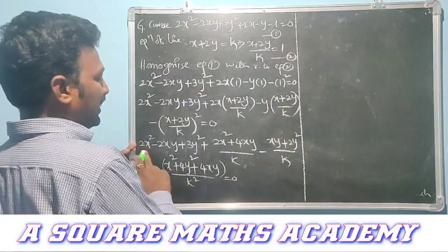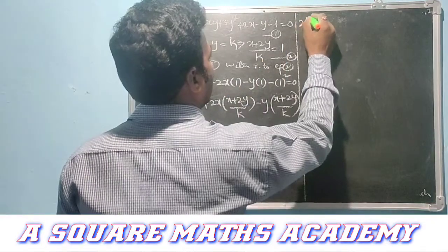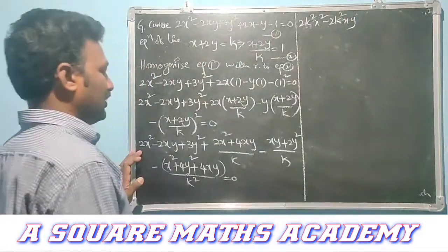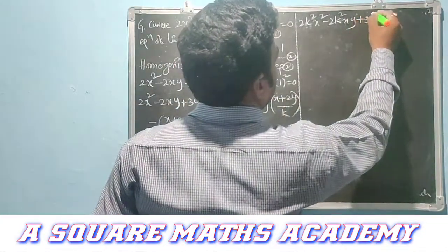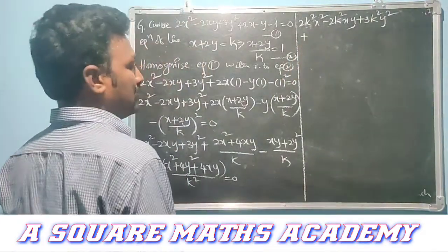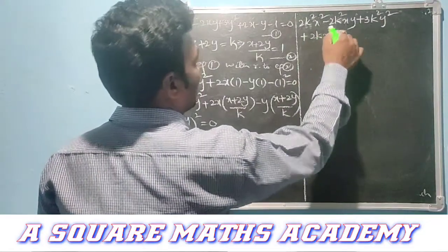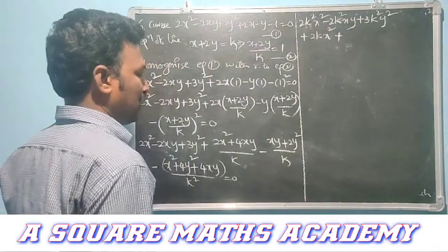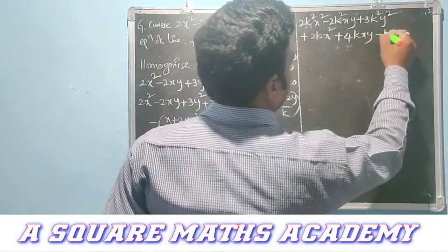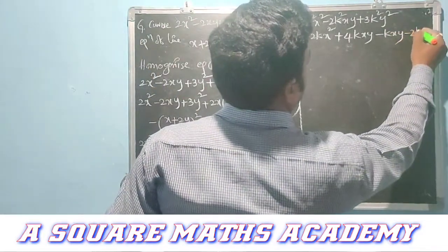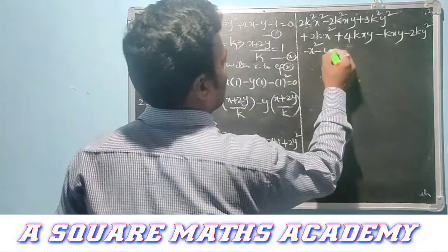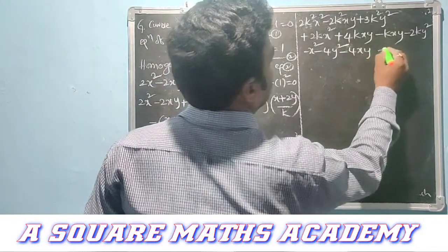Expanding and collecting terms: 2k²x² − 2k²xy + 3k²y² + 2kx² + 4kxy − kxy − 2ky² − x² − 4y² − 4xy = 0.